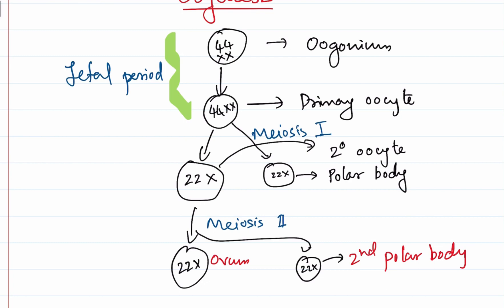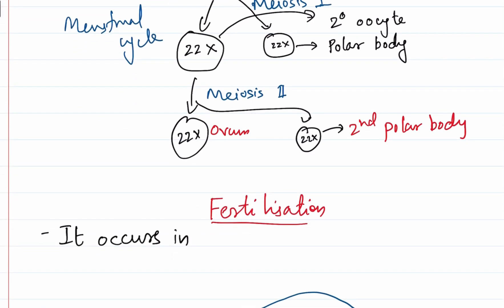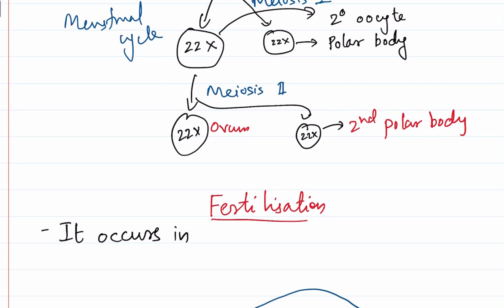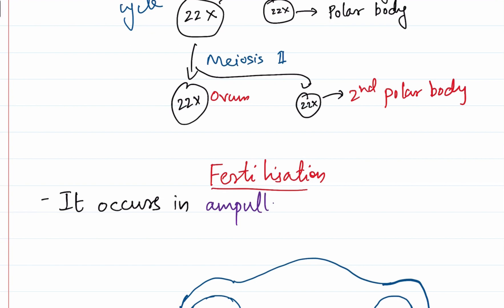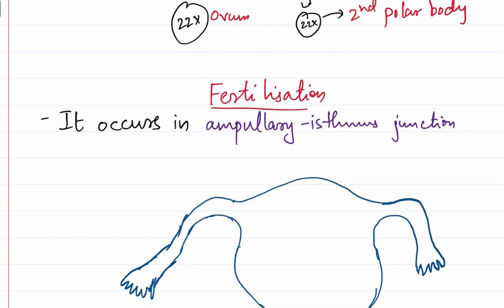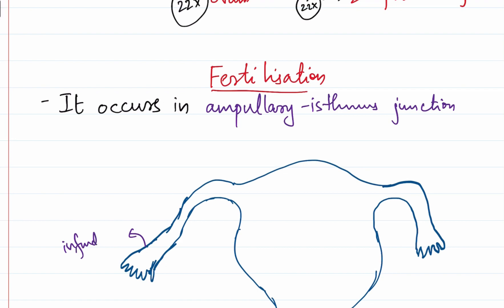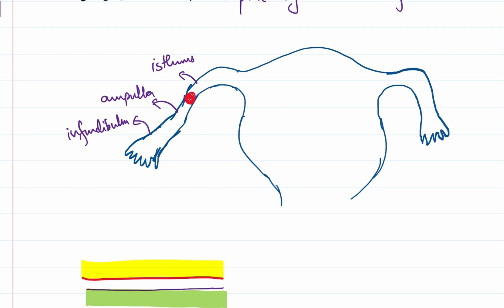These are the events which occur in spermatogenesis and oogenesis. By the end of this, the gametes are formed. These gametes must fuse to form the zygote, and this process is what we call fertilization. Where does fertilization occur? Fertilization occurs at the ampullary-isthmic junction — that is, the ampullary-isthmic junction of the fallopian tube. The fallopian tube has an infundibulum with the fimbria, then an ampulla, and then a narrow isthmus. It is at this ampullary-isthmic junction of the fallopian tube where fertilization occurs.